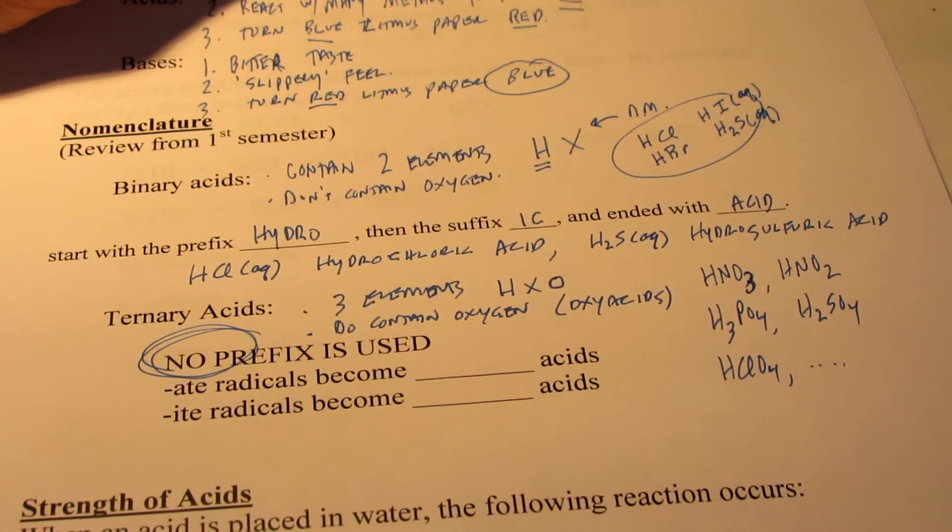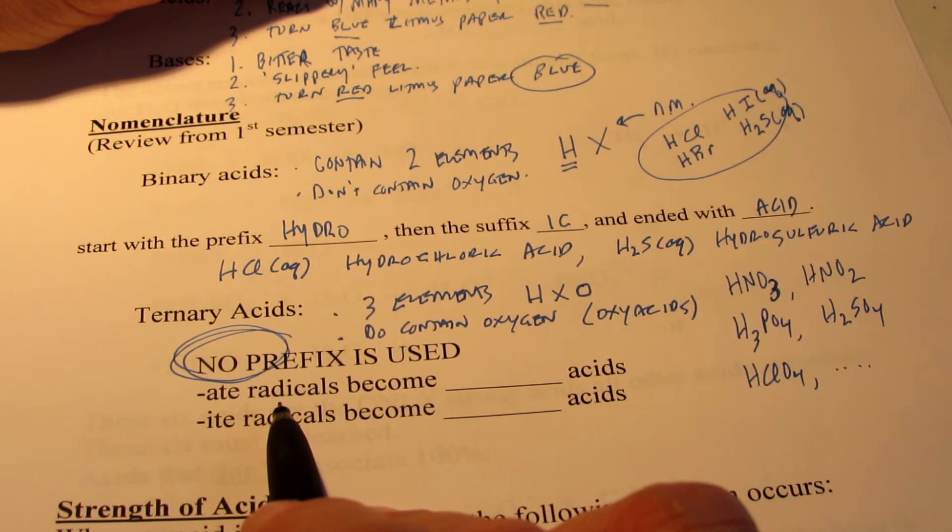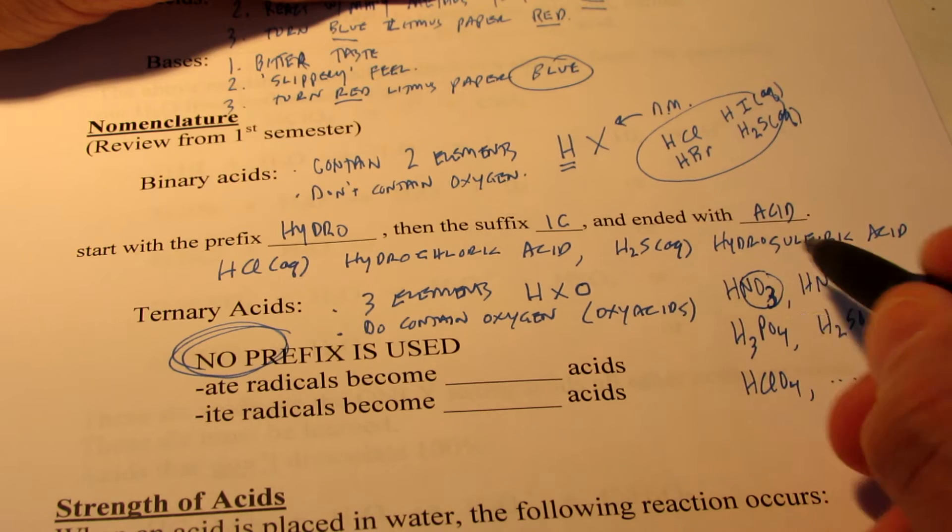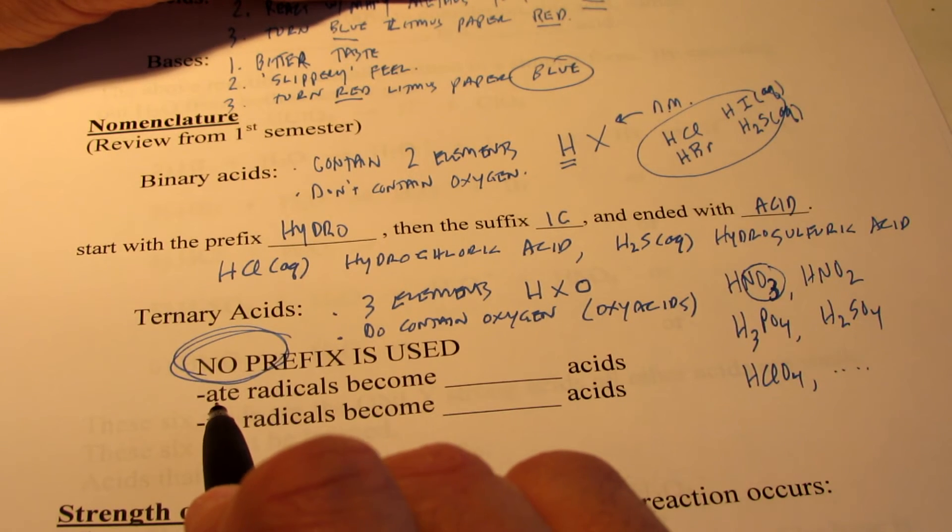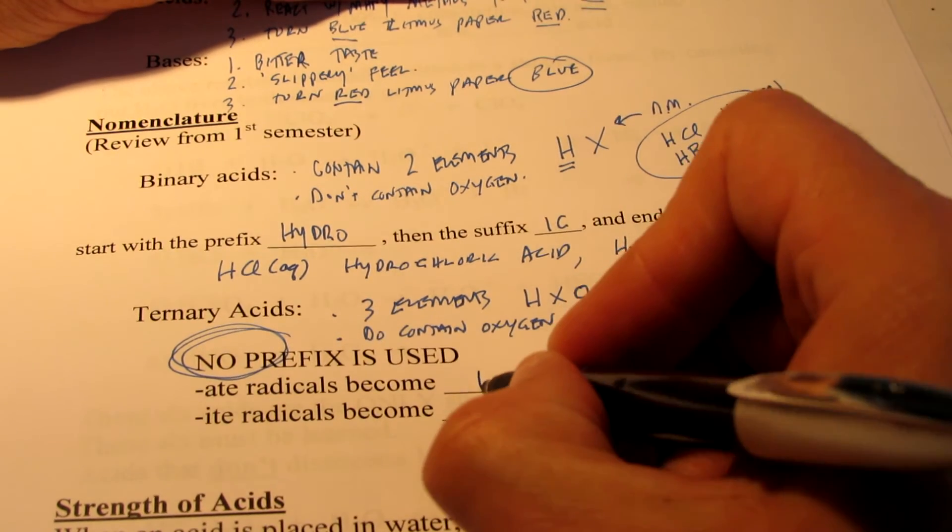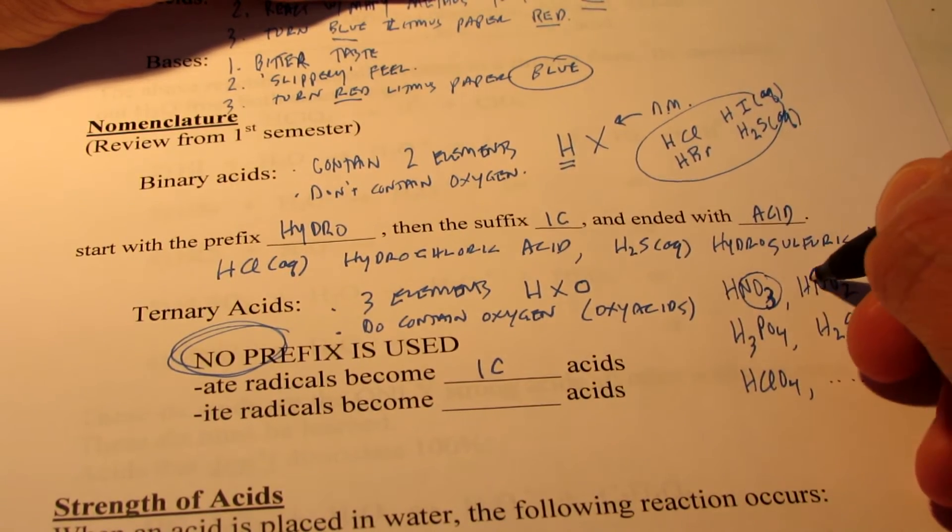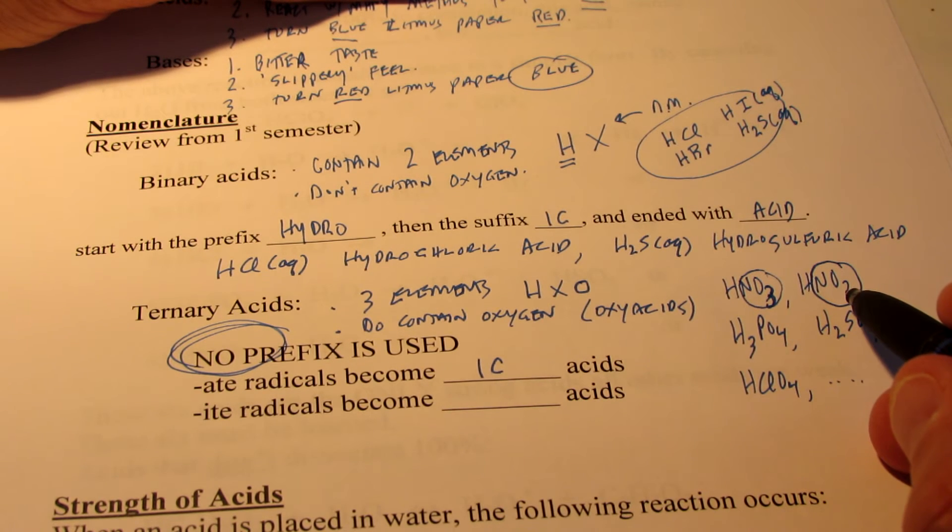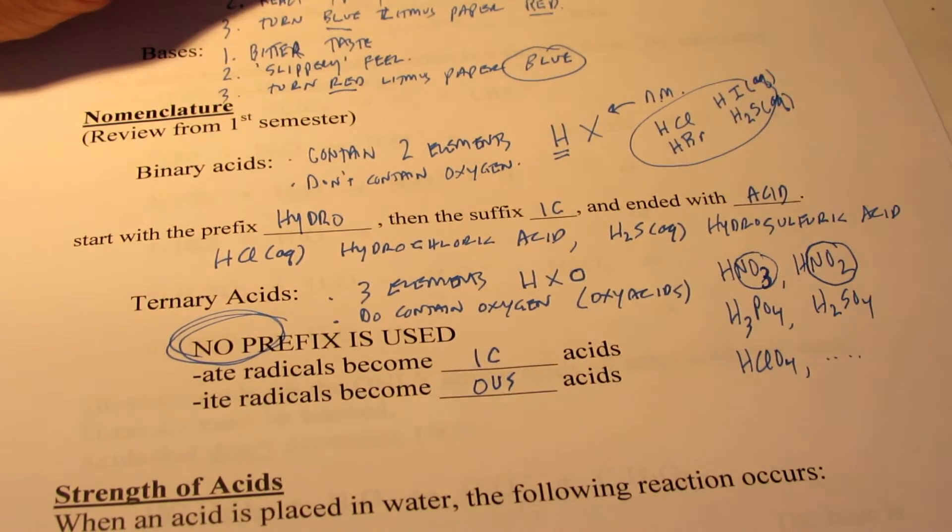Now, to name these, we look at the polyatomic ion that the hydrogen is stuck to. In this case, hydrogen is stuck to the nitrate ion. NO3 negative is called nitrate. And if it ends with -ate, as this does, they end up becoming -ic acids. In the case of HNO2, we see that hydrogen is bonded to the nitrite ion. NO2 negative is called nitrite. And so these become -ous acids, O-U-S.